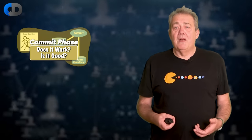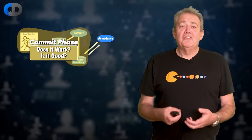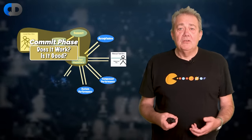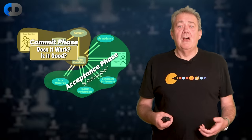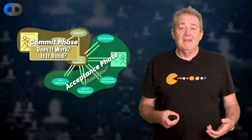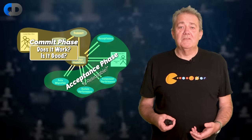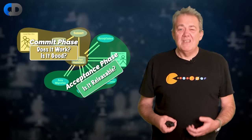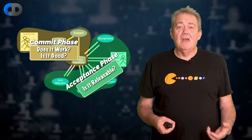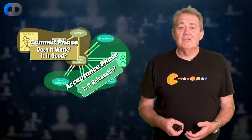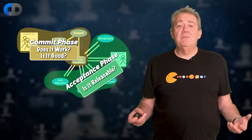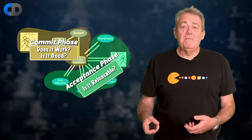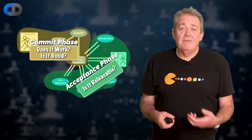The next phase in the pipeline is the acceptance phase. Does it work and is it good are very nice things to know, but they don't tell us enough to know that these changes are ready to release yet. That's the job of the acceptance phase — to answer the question: is it releasable? The scope of the commit phase is pretty generic; the best way to know if our code works and if it's good is through test-driven development, which helps us design better systems and gives us great feedback if we break anything.